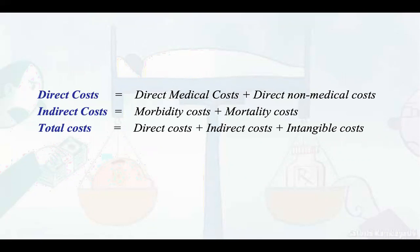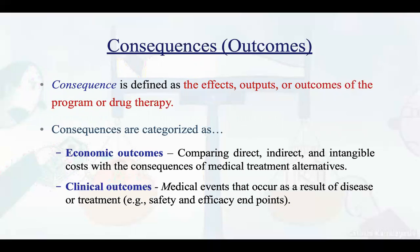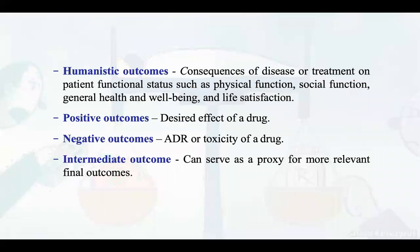Direct costs equal direct medical cost plus direct non-medical cost. Adding morbidity and mortality costs gives the total cost of a therapy. Consequences are defined as the effects, outputs, or outcomes of a program or drug therapy. These are categorized as: economic outcomes — comparing direct, indirect, and intangible costs with consequences of treatment alternatives; and clinical outcomes — medical events that occur as a result of disease or treatment, including safety and efficacy endpoints.